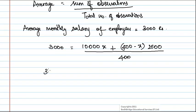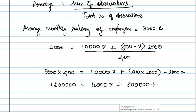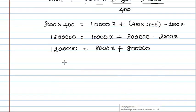From which we get 3,000 × 400 = 10,000X + 400 × 2,000 minus 2,000X. This gives 12,00,000 = 10,000X + 8,00,000 minus 2,000X, which implies 12,00,000 = 8,000X + 8,00,000. On further simplification, 8,000X = 12,00,000 minus 8,00,000, which equals 4,00,000.